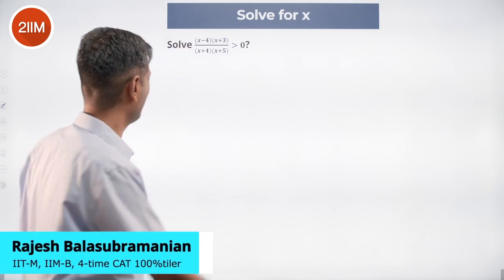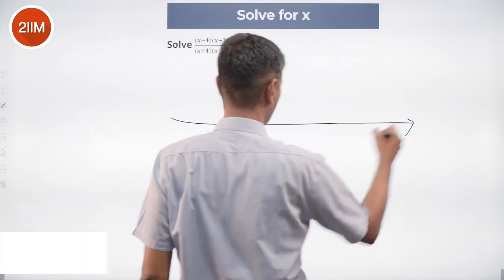Nice question. These questions are standard type. What do we do? We say, okay, when does the numerator go to zero? When does the denominator go to zero?